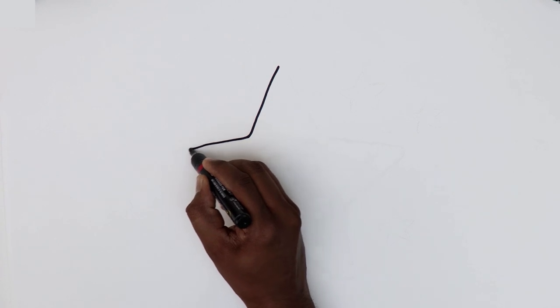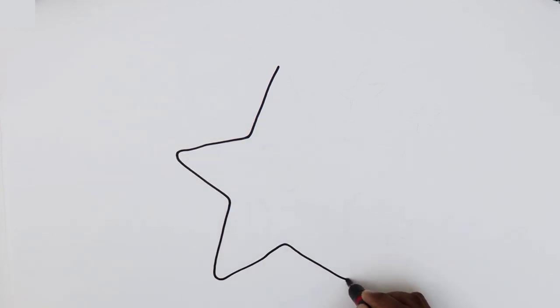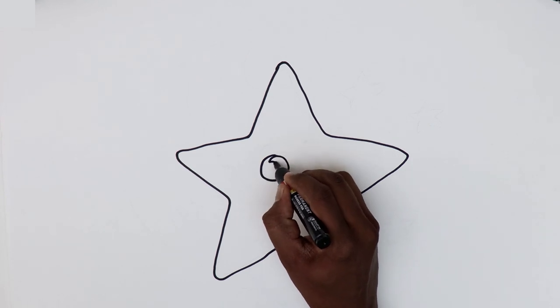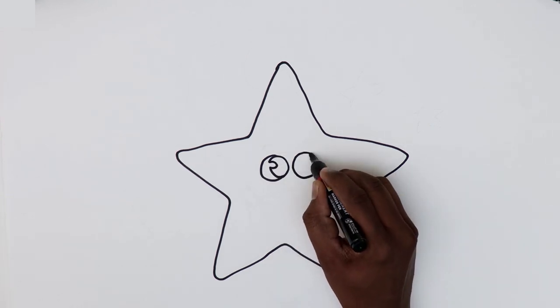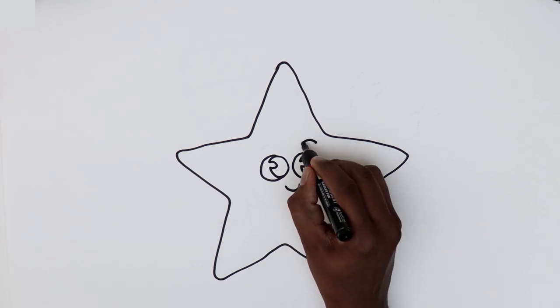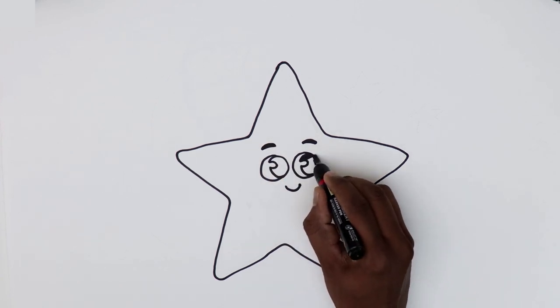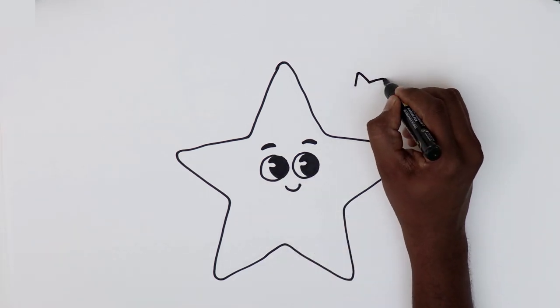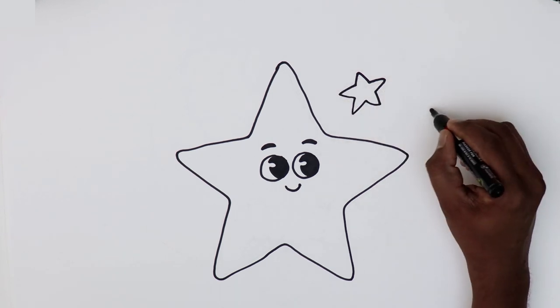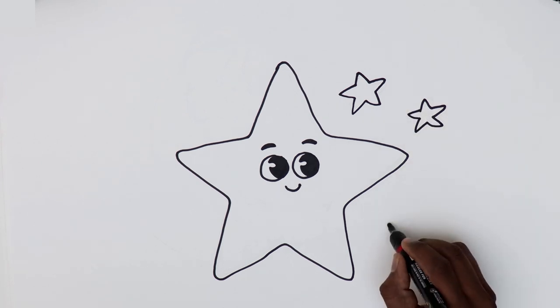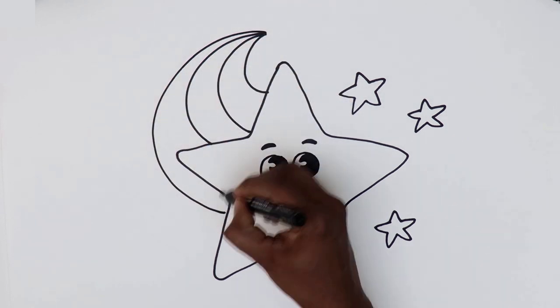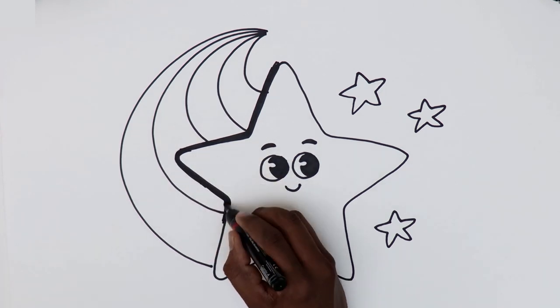Twinkle twinkle little star! Let's make a star today! Let's start by making the shape of a star! Make two big cute eyes for our star! And a smile! Wouldn't it be awesome to make some friends for our star? Let's do it! Drawing is so much fun!